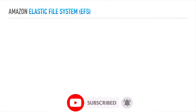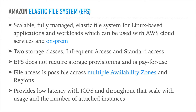Now let's look at what EFS is and how it differs from EBS Multiattach. EFS is a scalable, fully managed elastic file system for Linux-based applications and workloads, usable with both AWS cloud services and on-premises services. This is a key difference — EFS can be accessed from on-prem as well. EFS is strictly Linux-based, whereas EBS can support Windows applications, which AWS does not recommend for Multiattach.